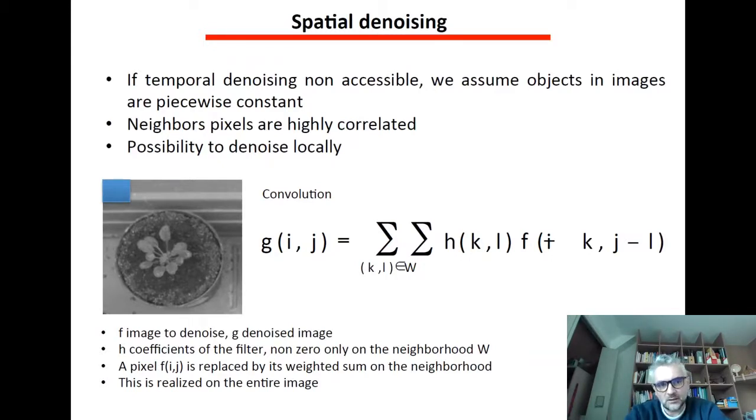And in this case, if temporal denoising is not accessible, we can assume that objects in images are piecewise constant, meaning that when we are at a place in image, the neighbors somehow are almost identical except with the noise which is randomly distributed.